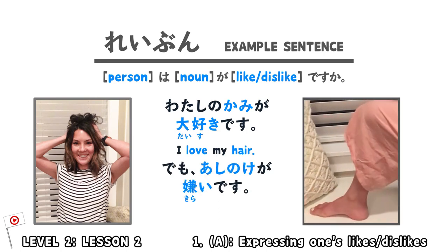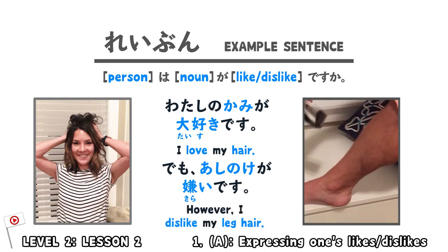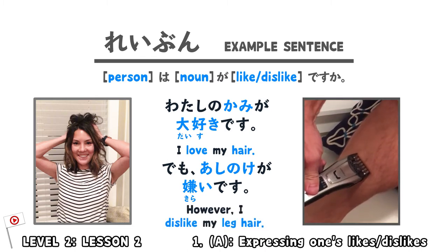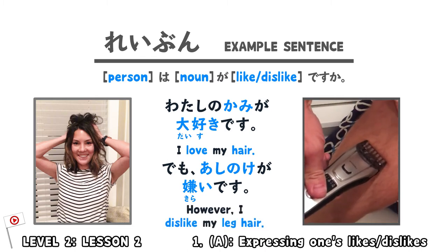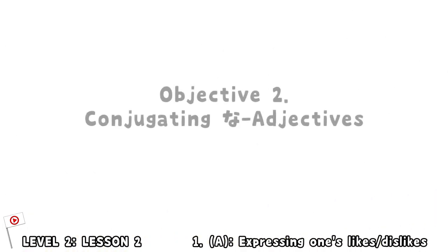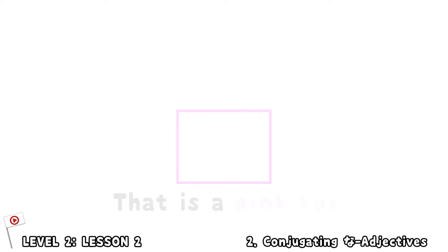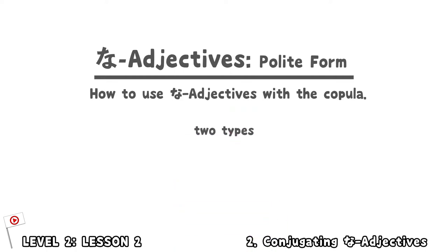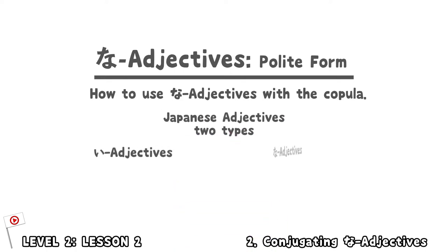I don't like my crush's hair. Conjugating na-adjectives. A word which modifies a noun is called an adjective. There are two kinds of adjectives in Japanese: i-adjectives and na-adjectives.